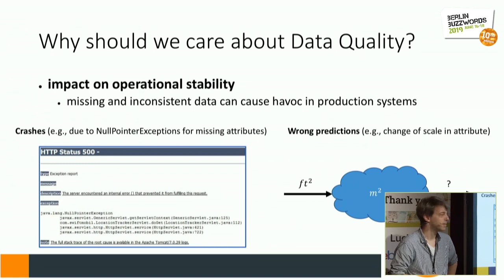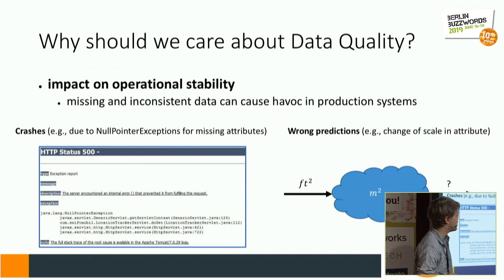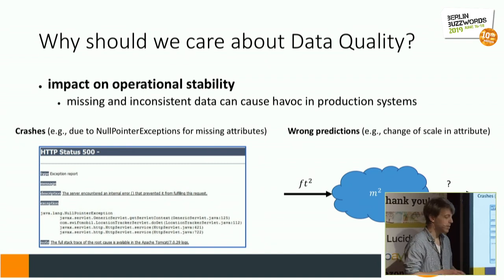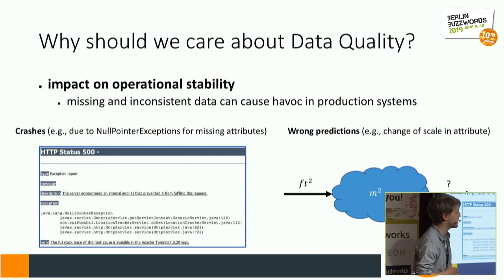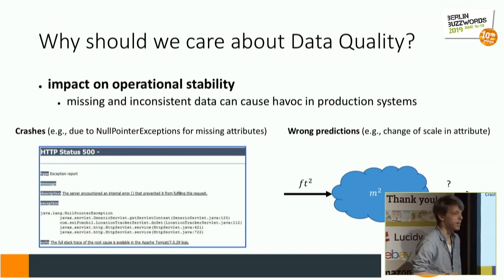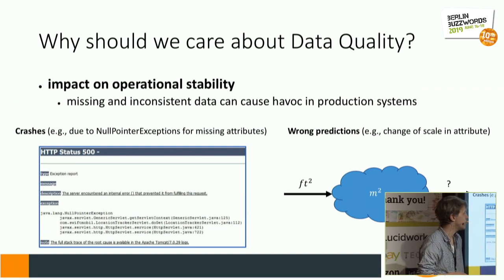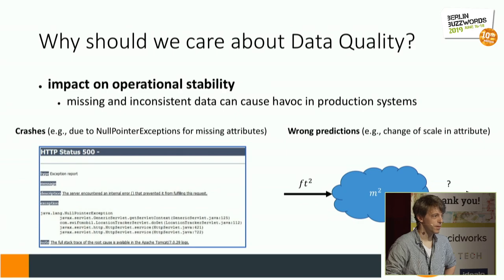This usually happens if there is data missing — that's a very obvious case where systems crash. But there is also a much more subtle one. Imagine a machine learning model that is configured to consume some upstream data source. The model makes basic assumptions about the data, for example the scale of an attribute — it thinks it's square meters, but at some point the data producer might change it from square meters to square feet. If that happens, it's very likely that the model will not crash, but will rather produce predictions that are slightly off. Finding these kinds of errors is very hard because they don't make services and systems fail.